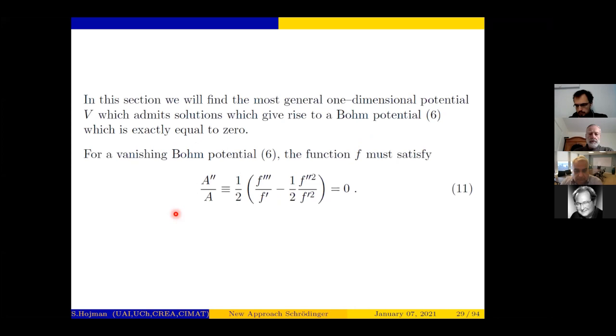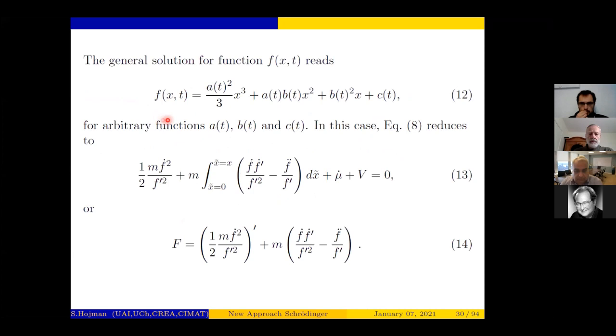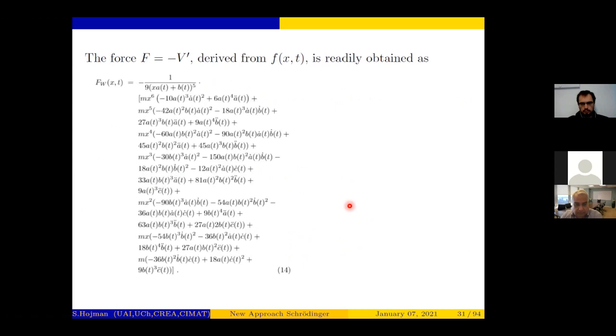So I'm going to study now the case of vanishing Bohm potential. That's an equation for f, and when you have that, the most general lowercase f that you get is this one where you have three arbitrary functions of time. Therefore, any potential that cannot be written in terms of this f, then they are not going to have vanishing Bohm potential. The force has the form of equation 14, and the most general force you can get in one dimension that will have some solutions that have vanishing Bohm potential is that one over there, which is not of course very illuminating.